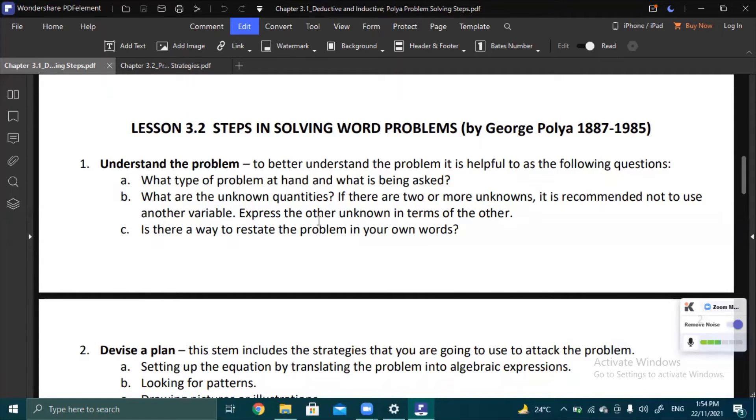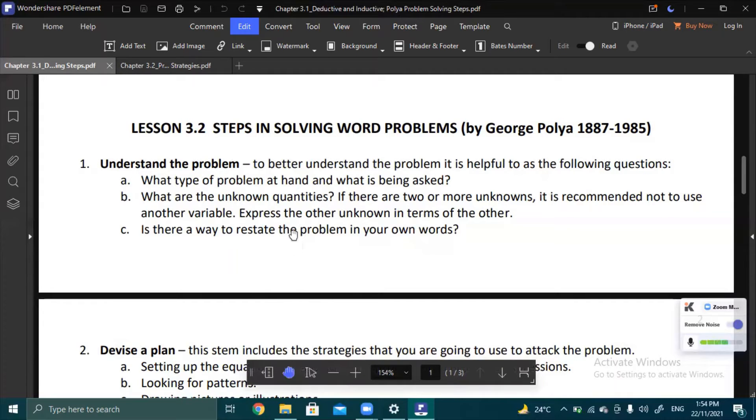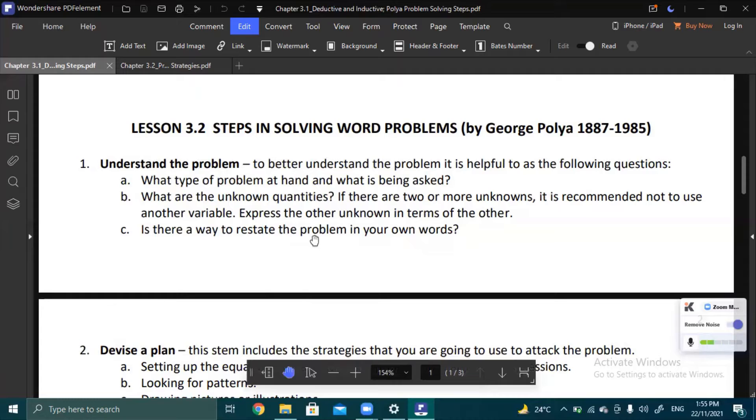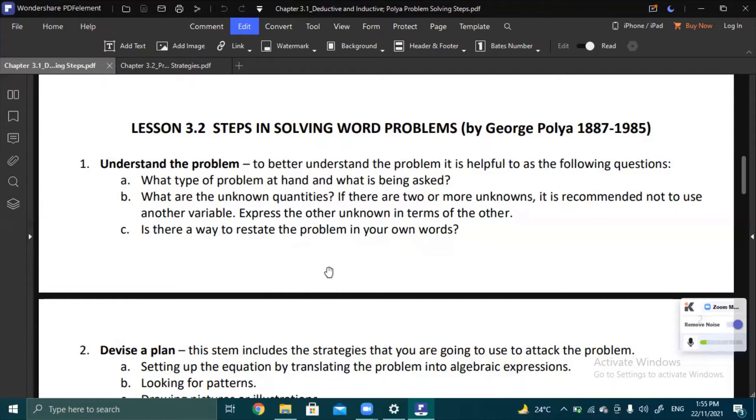It's like an age-related problem. For example, I am 35 years old now, my sister's age is twice. Is there a way to restate the problem? If possible, restate it in such a way that it's easier to understand.